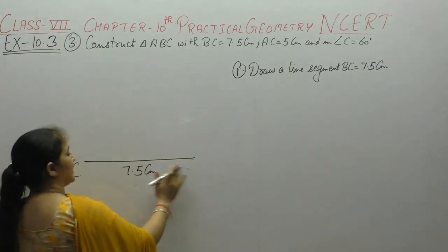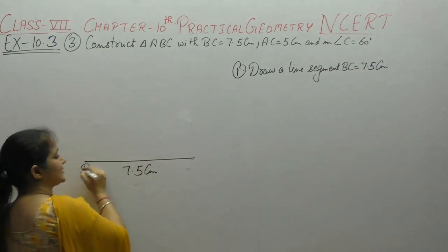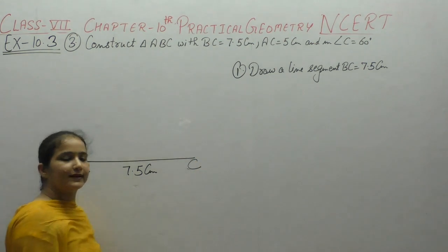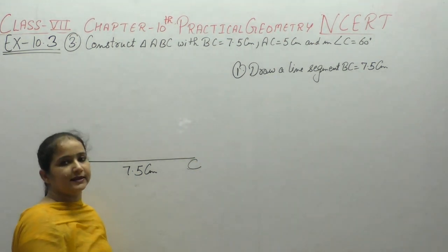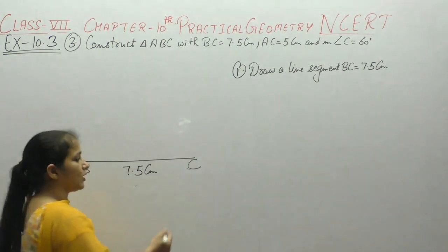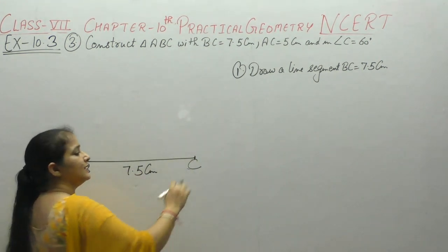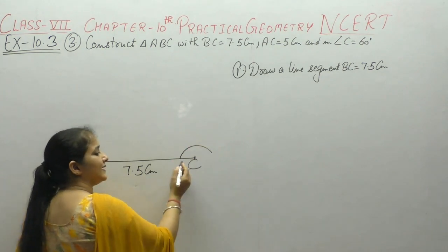Now measure of angle C 60 degree. With the help of compass draw a line, C center, compass open to any radius.